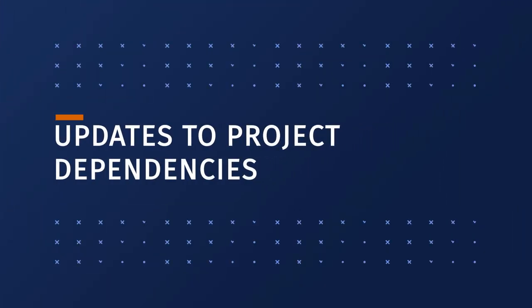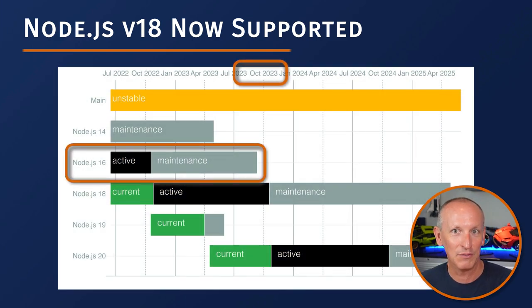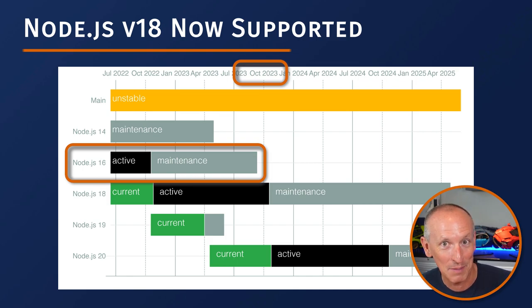The next set of updates are all around dependencies. Probably the biggest one is that all SharePoint Framework projects version 1.18 or higher now support Node.js version 18. Previously, only Node.js version 16 was supported, and it still is, but only for existing SharePoint Framework projects. Node.js 16 reached End of Life on September 11th, 2023 — which may be exactly why SharePoint Framework 1.18 came out one day later on September 12th.